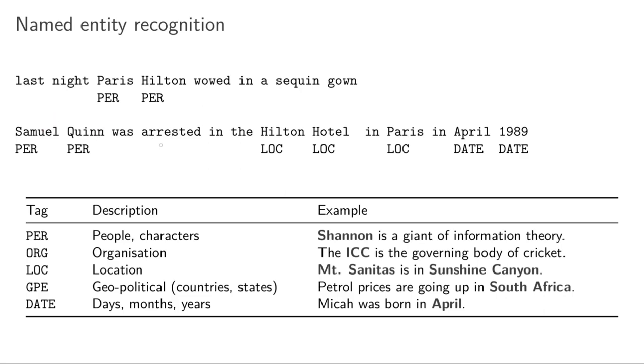Here's another sentence: 'Samuel Quinn was arrested in the Hilton hotel in Paris in April 1989.' Now in this case Paris isn't a person anymore, it's now a location, so this is a different entity type. You can see the different types of entities you've got: people characters, organizations, locations, geopolitical places, and dates.